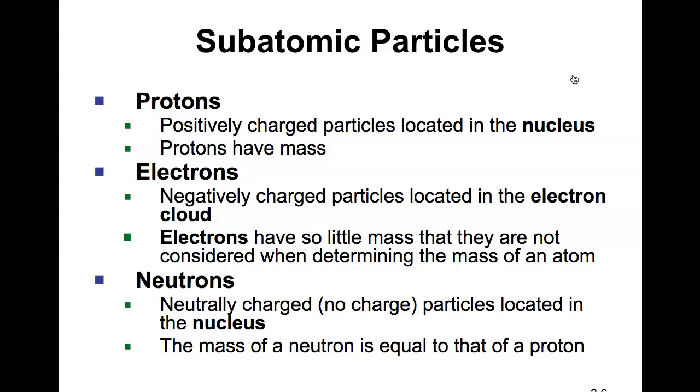Electrons are negatively charged particles located in the electron cloud, or the shells or orbitals. Electrons have so little mass that they are not considered when determining the mass of the overall atom.